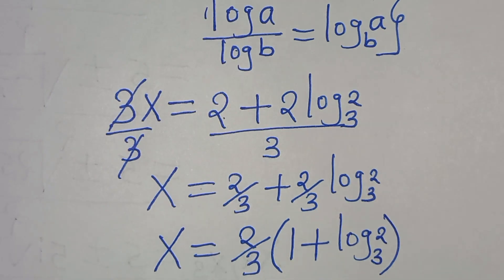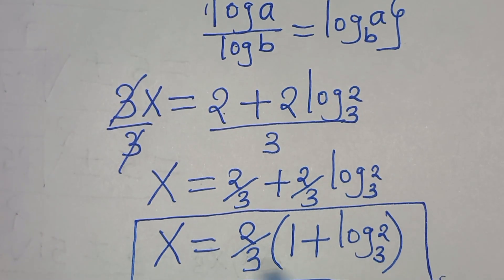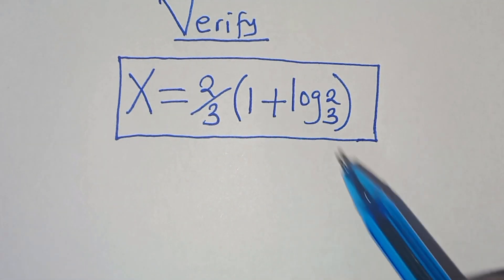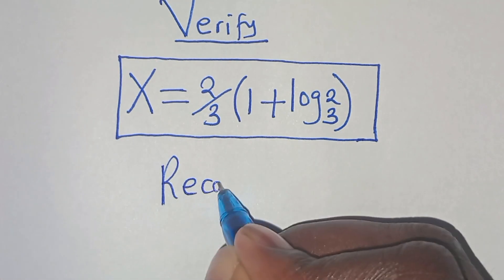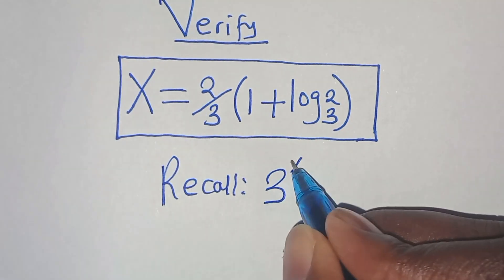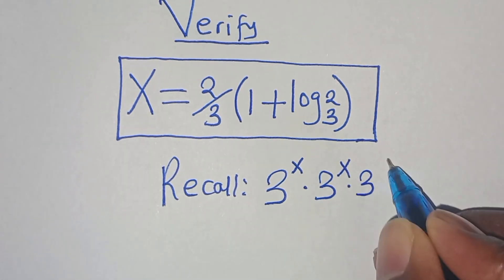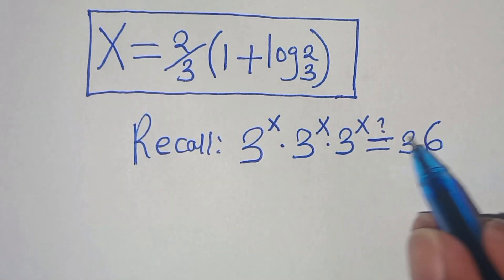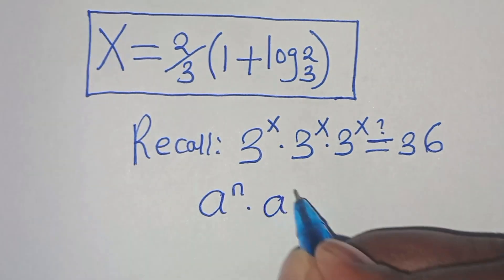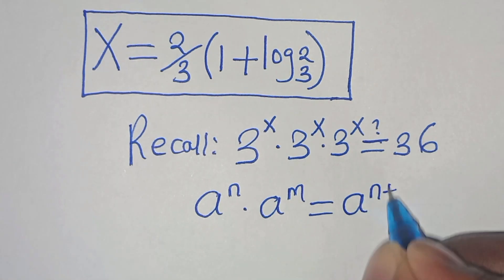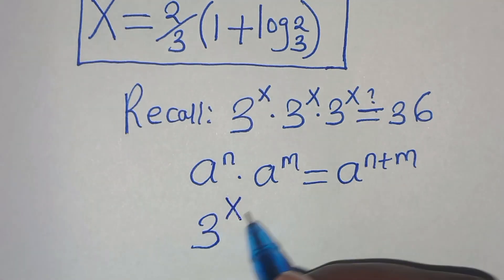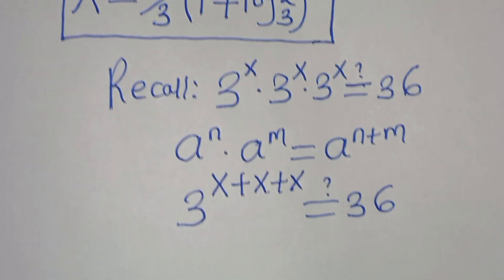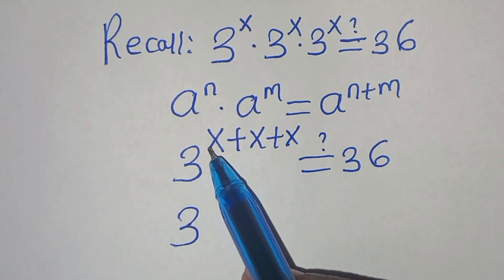This is the value of x. The next step is to verify that this value satisfies the equation. We recall that 3 to the power of x times 3 to the power of x times 3 to the power of x should equal 36. Applying the exponent property, 3 to the power of x plus x plus x equals 3 to the power of 3x, which should give 36.